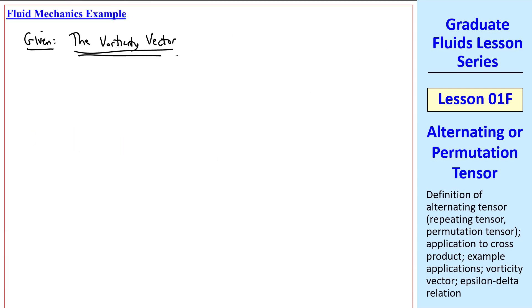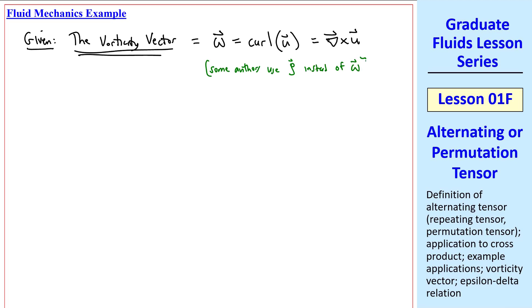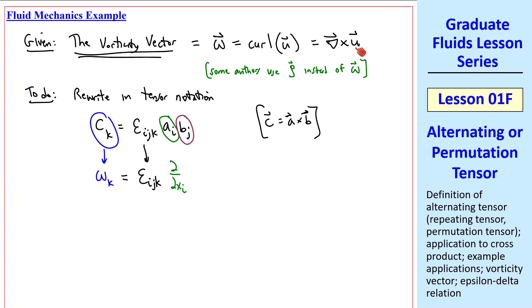Let's do a fluid mechanics example. Let's take the vorticity vector. We'll use omega, which is defined as the curl of the velocity vector, or del cross u. I note that some authors use zeta instead of omega for the vorticity vector. But in these lessons, we'll use omega. Let's rewrite this in tensor notation using the equation we had above for cross product. We'll let C_k equal omega_k. Epsilon_ijk comes down. The vector a is the del vector with subscript i, so this is del/del x_i. And the b vector is u with a j subscript. So we write the vorticity vector as epsilon_ijk del u_j/del x_i.